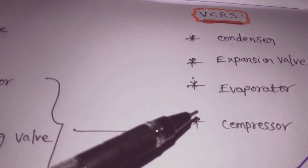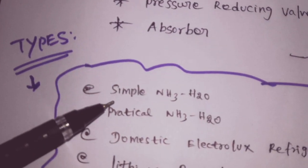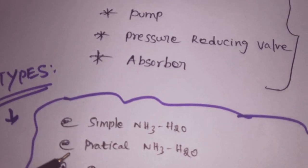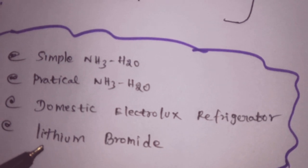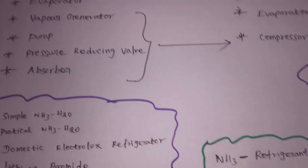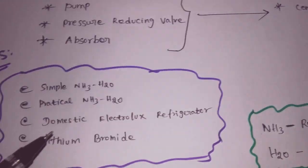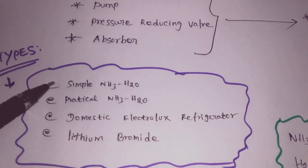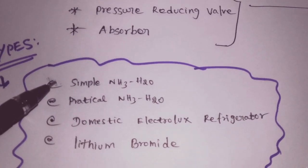There are four types of Vapor Absorption Refrigeration Systems: Simple Ammonia Water Refrigeration System, Practical Ammonia Water Refrigeration System, Domestic Electrolux Refrigerator, and Lithium Bromide Absorption Refrigeration System. The Simple Ammonia Water Refrigeration System is the most commonly used.